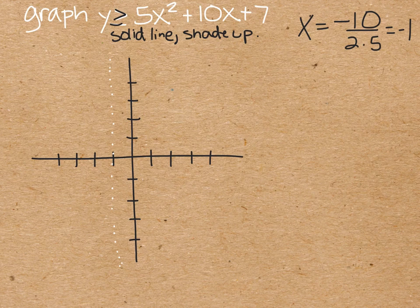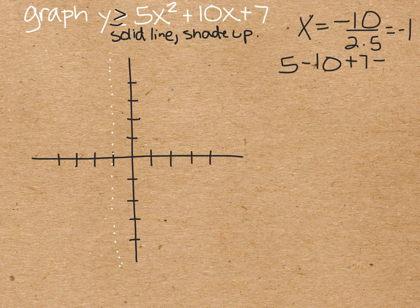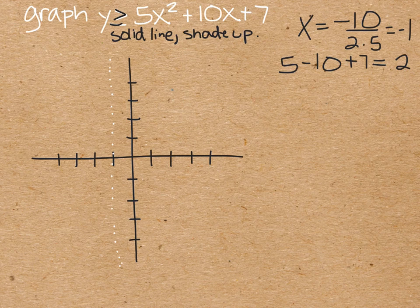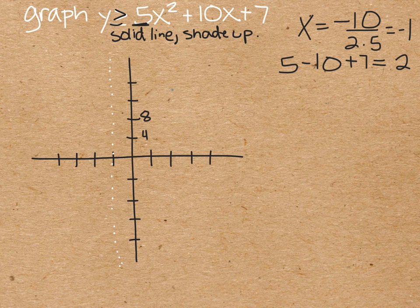We need to find the vertex, so we're going to plug in a negative 1. 5 times negative 1 squared is 5, plus 10 times negative 1 is minus 10. 5 minus 10 plus 7 is going to give us 2. So our vertex is at negative 1 and positive 2. And I'm actually going to adjust my scale on this. I'm going to count these by 4s, because I know I've got a stretch of 5, and that's going to make it really tall and skinny.